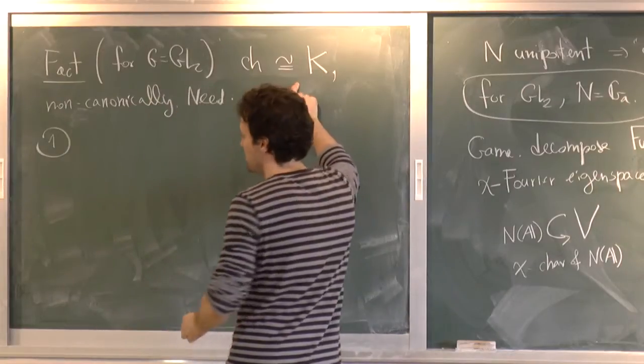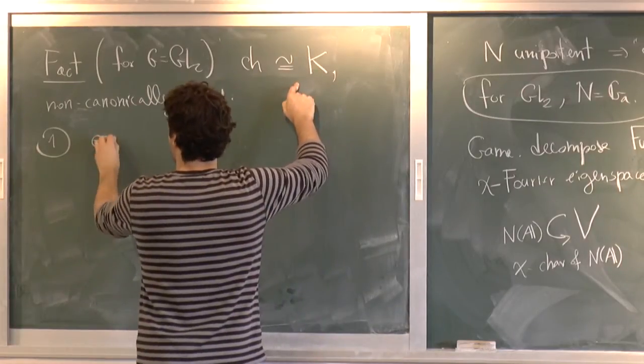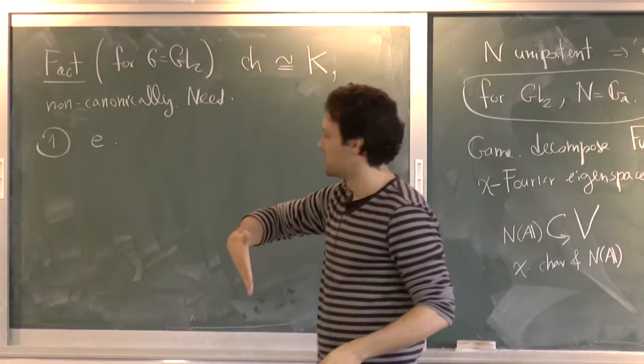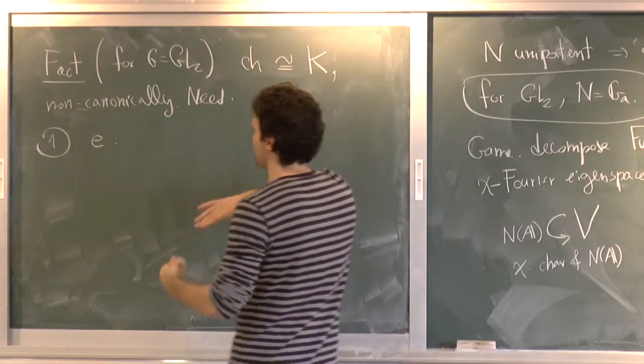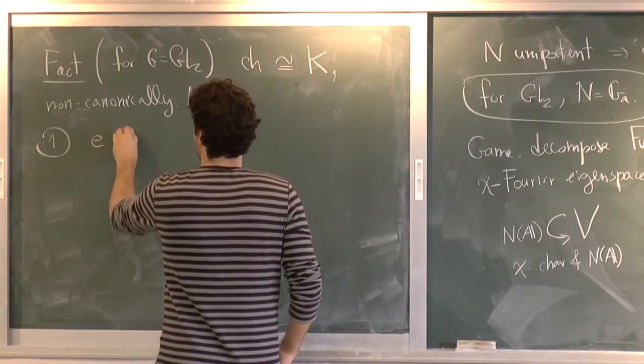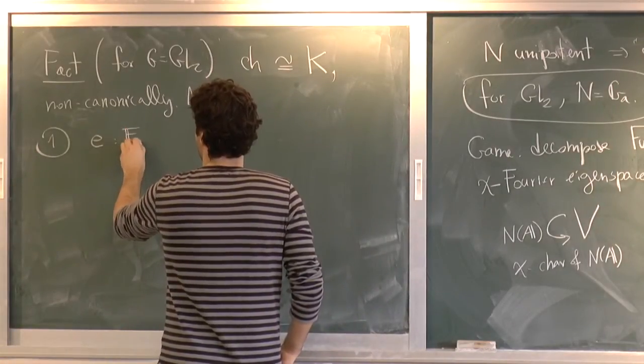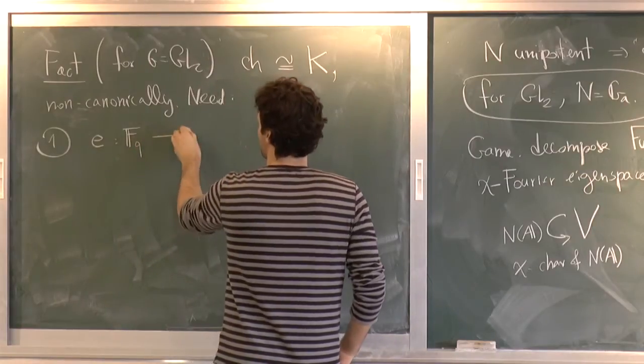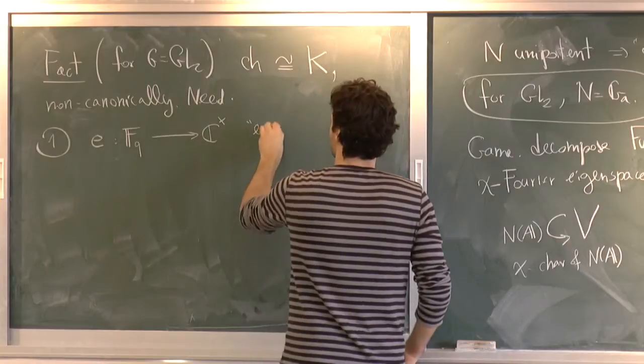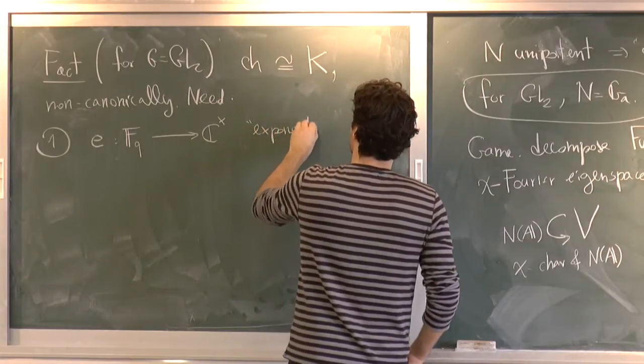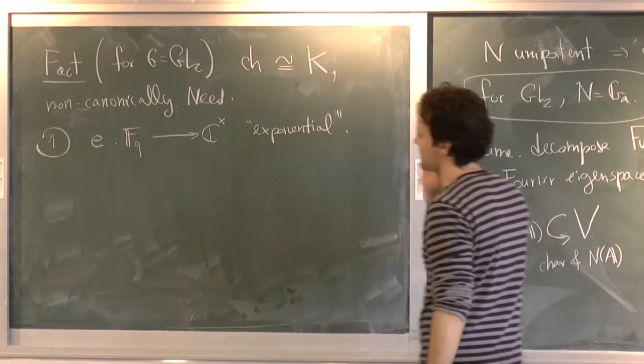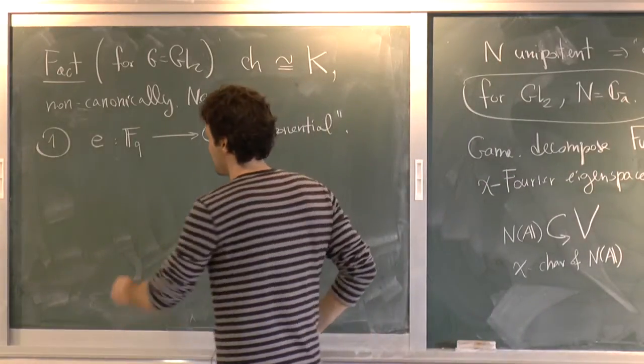CH is equivalent to big K function field. And this is not canonical. What do I need to specify in order to make it canonical? So I need two things to make this identification. First, I need an exponential. So I need a character E that moves from additive characters, namely the dual of the adeles, to C-star valued characters. So I need a character from F_q to C-star. I call this the exponential.